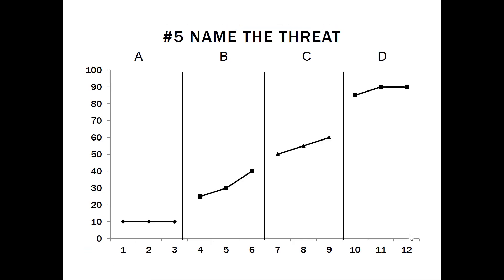Name the threat on graph number five. We do see some sequential effects here. It could be adaptation.